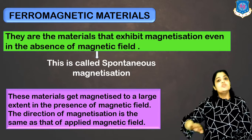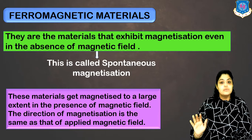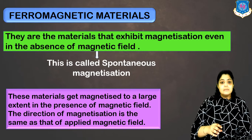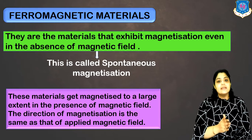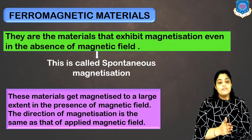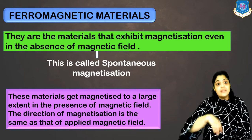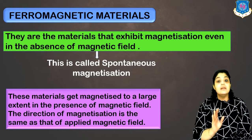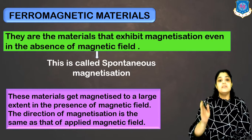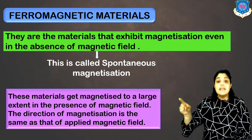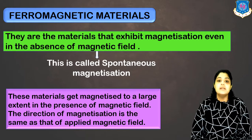These materials already have parallel dipoles. When the magnetic field is applied, all the dipoles will reorient in the direction of the magnetic field. But when the magnetic field is removed, they will again become parallel to each other, leading to magnetization even when there is no magnetic field. Hence these materials are permanent magnets.